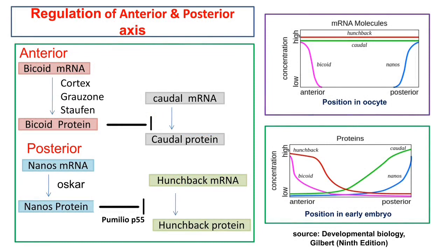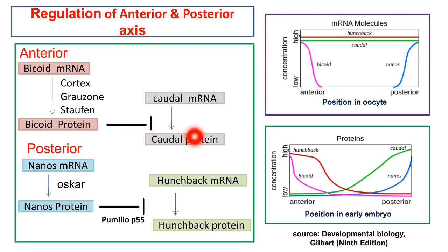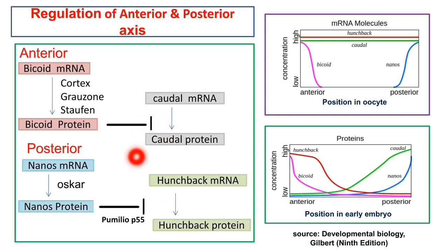Regarding regulation of the anterior-posterior axis: bicoid protein prevents the translation of caudal mRNA in the anterior region, while nanos protein inhibits the translation of hunchback at the posterior part. This inhibition results in opposing caudal and hunchback gradients.